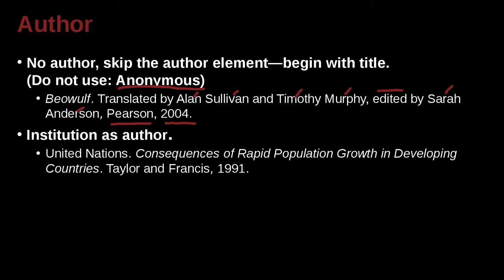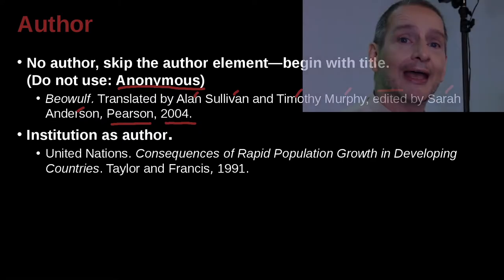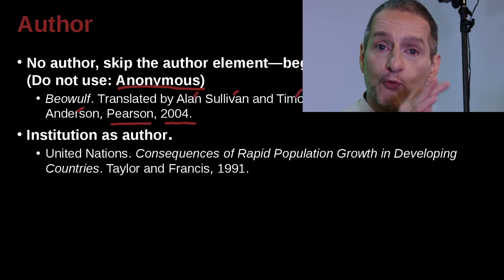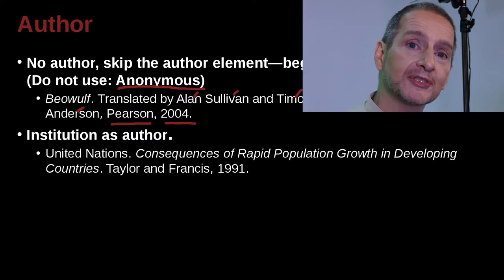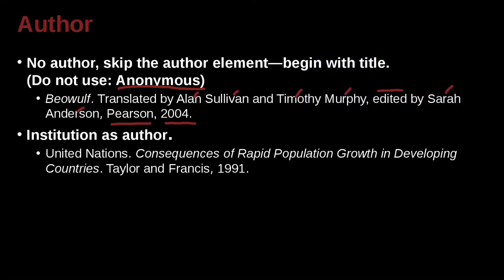Another common situation with no author would be when a paper or book is published without the name of an author, but it was published by a group or a company. A good example would be if you go online and look for a company's annual reports — these are not published by a person; they are published by the company. Here's one: 'Consequences of Rapid Population Growth in Developing Countries' — it's published by Taylor and Francis, but the content was actually created by the organization the United Nations. So we put the name of the organization there just as if it were a person. You do not use last name first because it doesn't have a first or last name — it's just a company or organization name. United Nations, period.